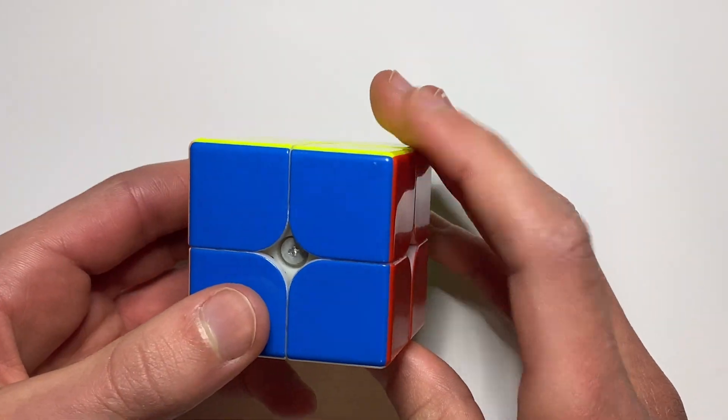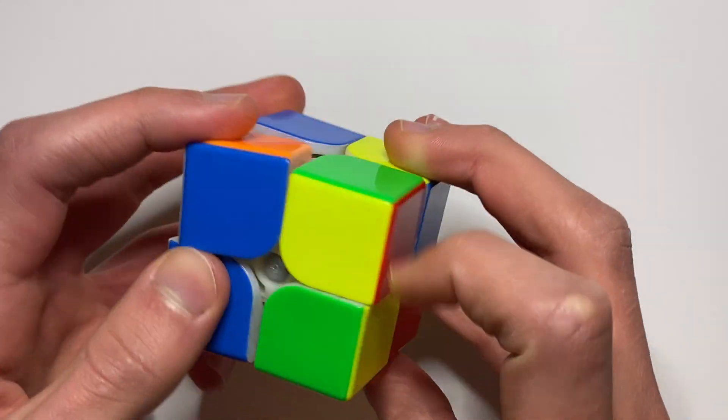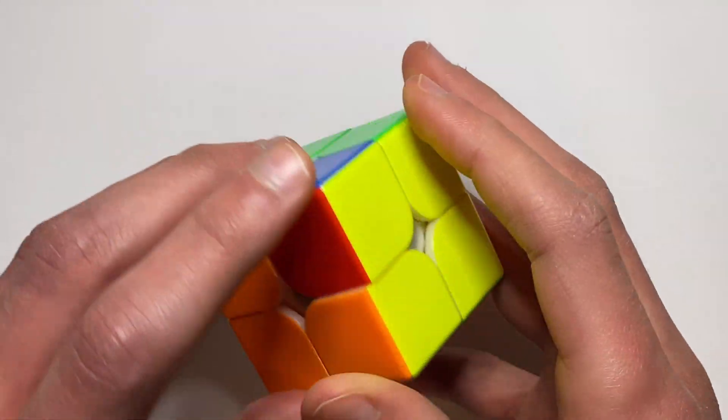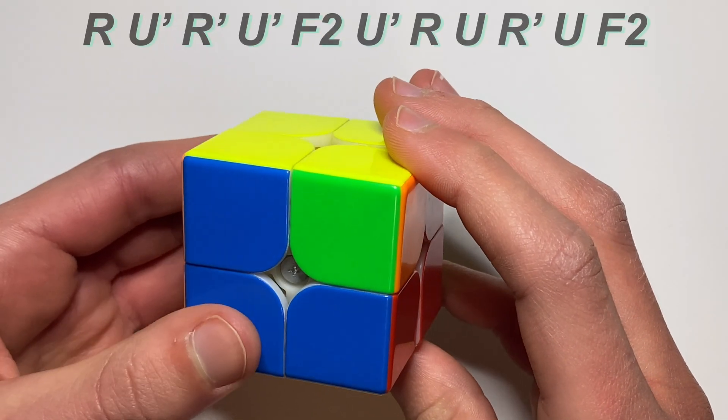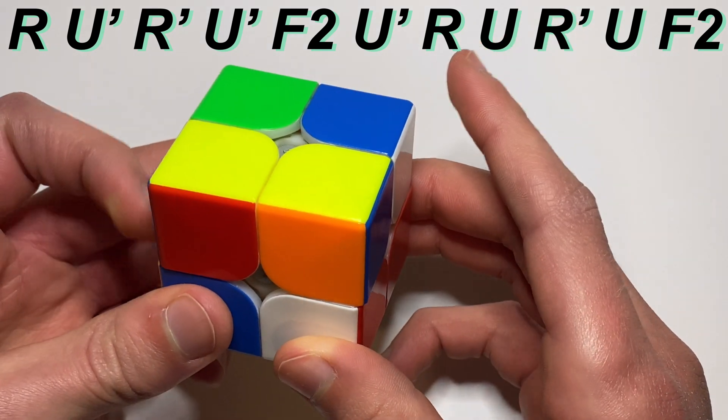For the first one, this is a substitute for a Y perm. So most people use the Y perm for the diagonal corner swap like this, but here's another algorithm that you can use.